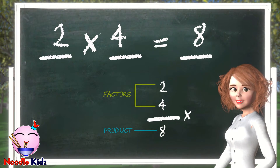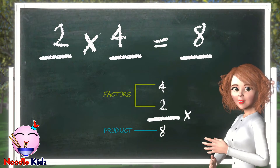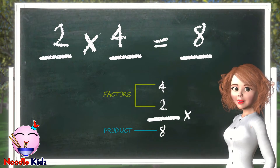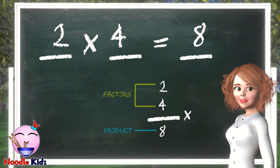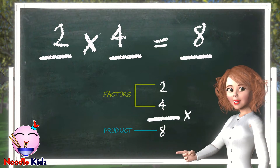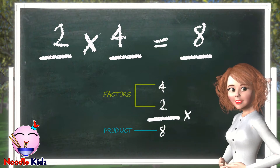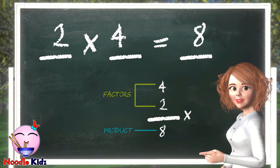If you switch the factor numbers — four times two and two times four — the product will be the same.